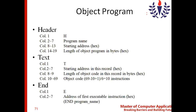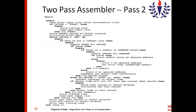When pass two is done, the object program is generated in this fashion. Let us move to the algorithm for pass two. During this process, each record of the object program is being created. The algorithm begins with BEGIN and ends with END. The first step is to read the first input line, which is taken from the intermediate file. In pass two, the assembler reads the intermediate file and processes each individual line.